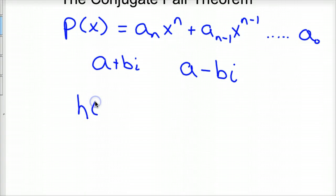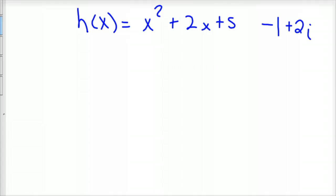So if you had a function, let's take it down a notch and then we'll take it back up a notch. Let's say we had a function h of x equals x squared plus 2x plus 5. Well, I know that that polynomial has a root of negative 1 plus 2i. So I'm going to use synthetic division and show that the other root would be negative 1 minus 2i.